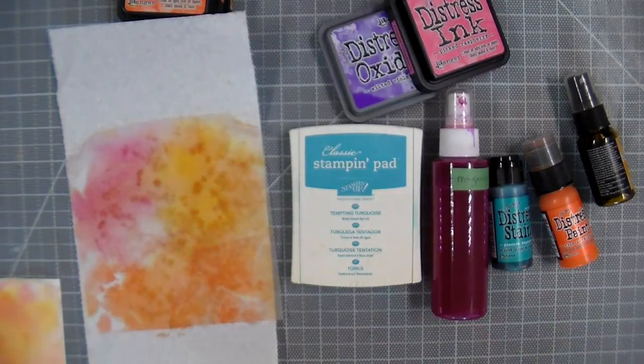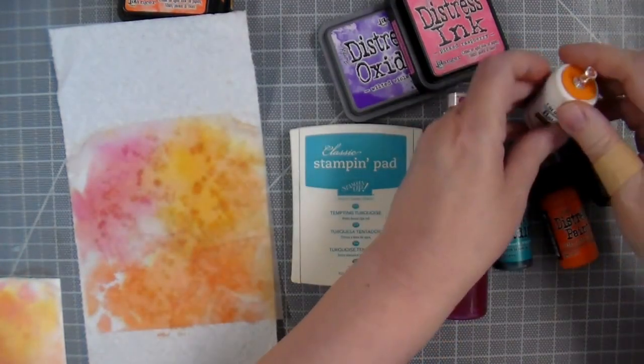And it's the same procedure, always put the color on the mat, spray with water, and drop your tissue paper on top.